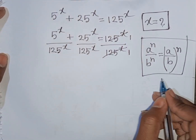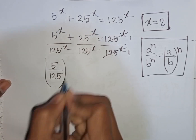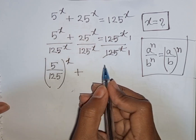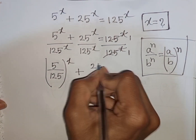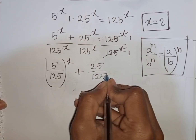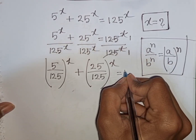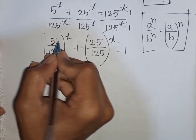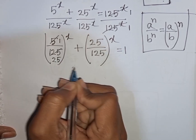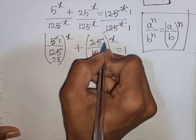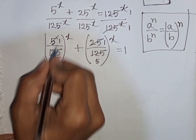According to this exponential rule, we write (5 over 125) power x plus (25 over 125) power x equals 1. Now 5 divided by 5 is 1, and 125 divided by 5 is 25, giving (1/25) power x. Then 25 divided by 25 is 1, and 125 divided by 25 is 5, giving (1/5) power x.